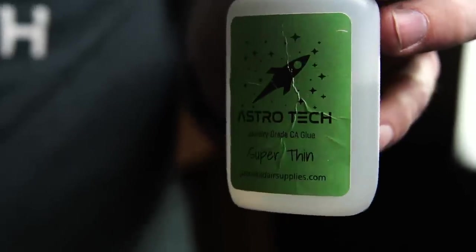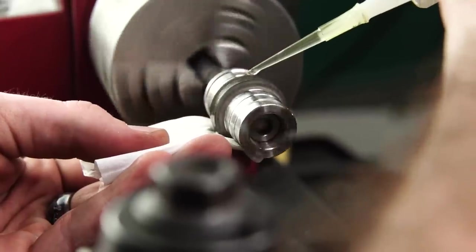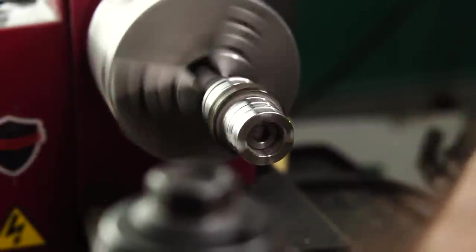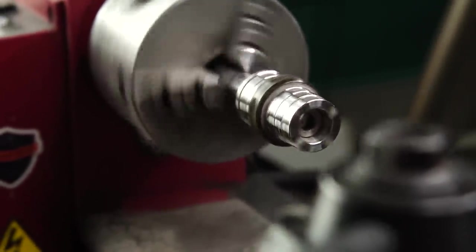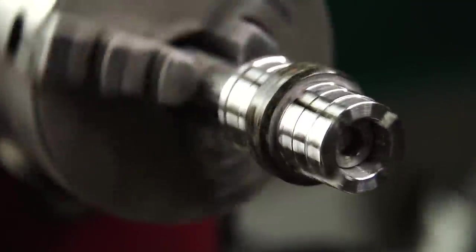Now once I'm sanding with the Dremel, I'm ready to go ahead and give this a CA finish. So you can see how I do this, I just hold up my paper towel to the ring and then just slowly drip some super thin CA on there. It's actually pretty amazing how nice the finish turns out.